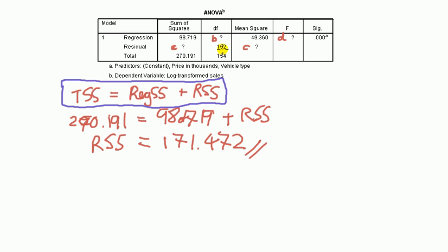Next, degree of freedom. Now, we're going to use a fact here that the degree of freedom for the regression plus the degree of freedom for the residual equals the degree of freedom, so what we're missing here, B, we can see directly, it's just the value 2, because 2 plus 152 equals 154. That's done.